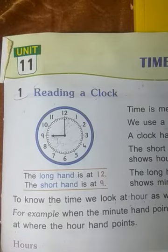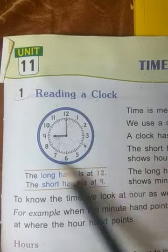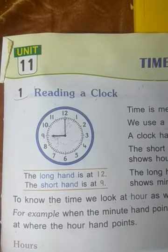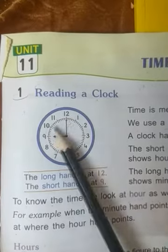Now, tell me students: how many numbers do we see on this clock? We see numbers from 1 to 12 on the face of a clock. Or we can say the face of a clock is divided into 12 numbers — 12 big numbers.